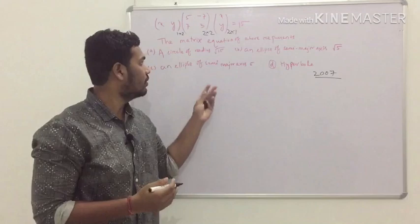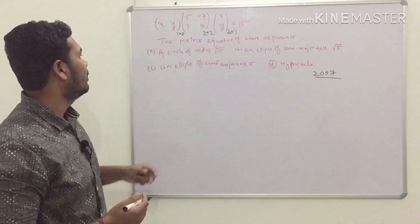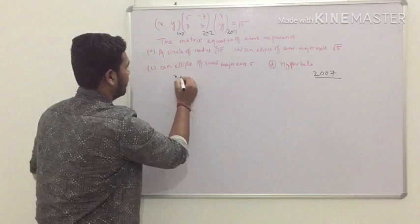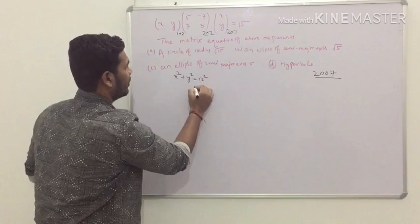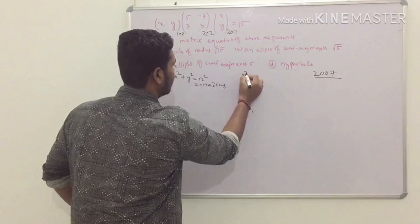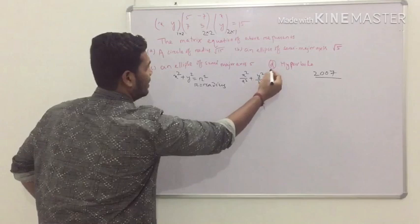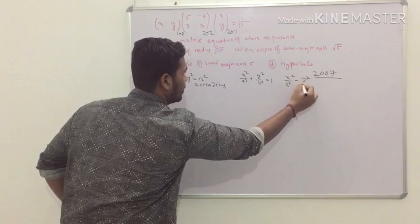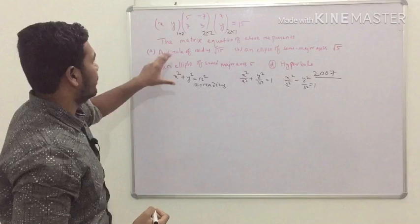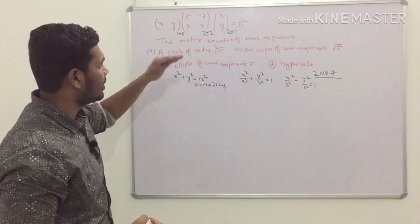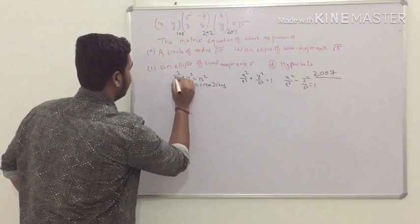First you must know the general equations of a circle, ellipse, and hyperbola. The general equation of a circle is x² + y² = r², where r is the radius. For an ellipse: x²/a² + y²/b² = 1, where a and b are the semi-major and semi-minor axes respectively. For a hyperbola: x²/a² − y²/b² = 1. Knowing these general forms allows you to reduce the given matrix equation into one of them.